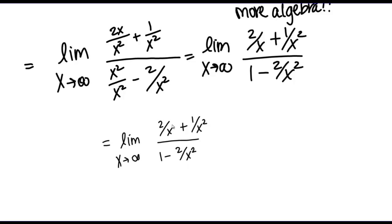For example, I want to think about what's happening to the term 2 over x as x goes to infinity — what is that term approaching? Well, as x goes to infinity, the denominator of this fraction is getting larger and larger, which means that this term overall is going to approach 0. We've seen that limit several times now. And the same thing with the term 1 over x squared — as x goes to infinity, that term is going to go to 0. And again, the same thing with 2 over x squared in the denominator.